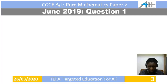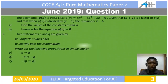Question 1 reads as follows. The polynomial P of X is such that P of X is equal to AX cubed minus 3X squared plus BX plus 6. Given that X plus 2 is a factor of P of X, and that when P of X is divided by X minus 1, the remainder is negative 6. Part A: find the values of the constants A and B. Part B: hence, solve the equation P of X equal to 0.